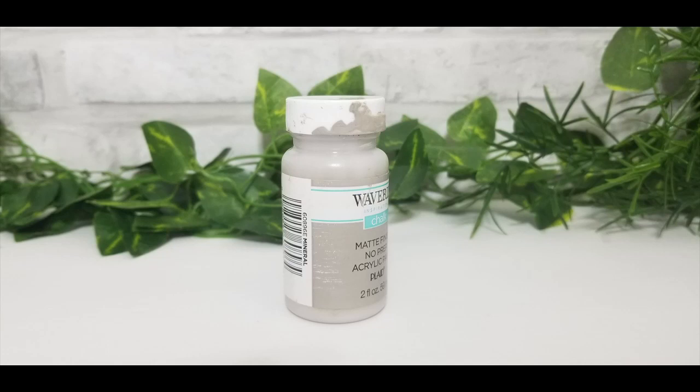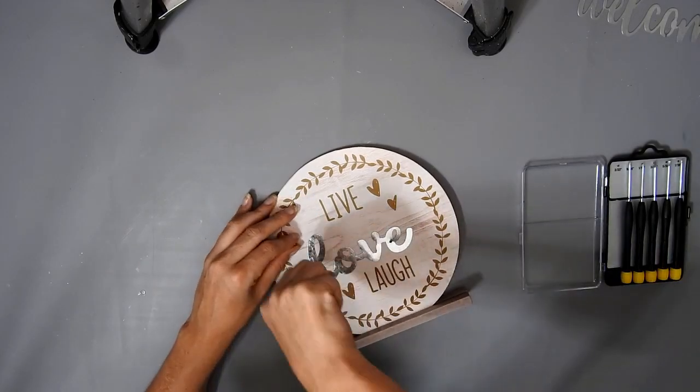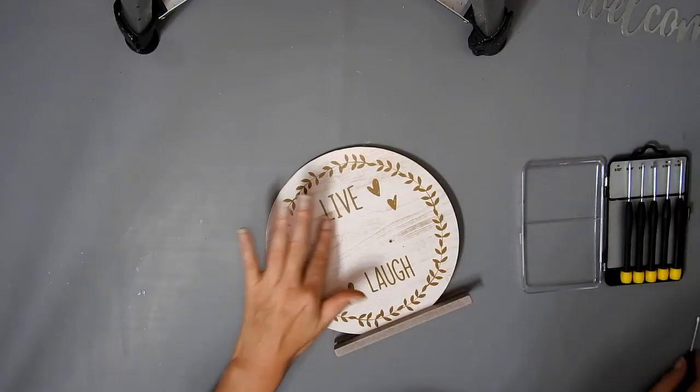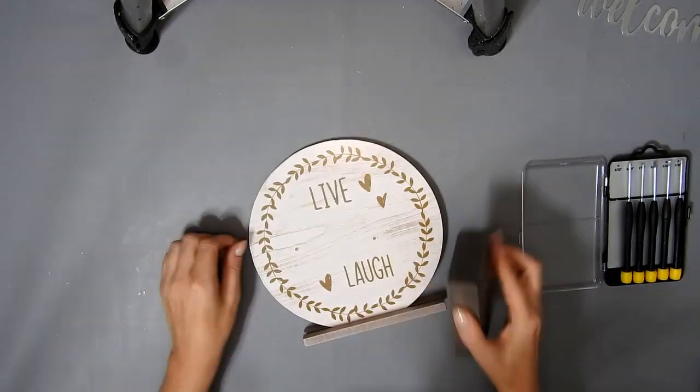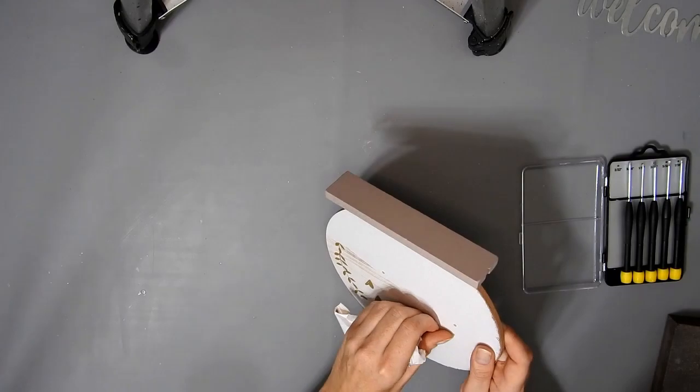Then I painted it with some mineral Waverly chalk paint. I have this 'live love laugh' sign and I just unscrewed the 'love' off the front of it. Then I gave it a little sand and pulled the paper off, and it came off so easy this time.